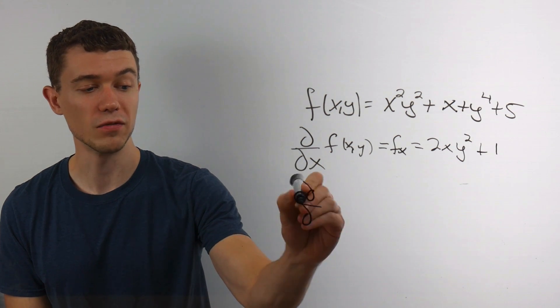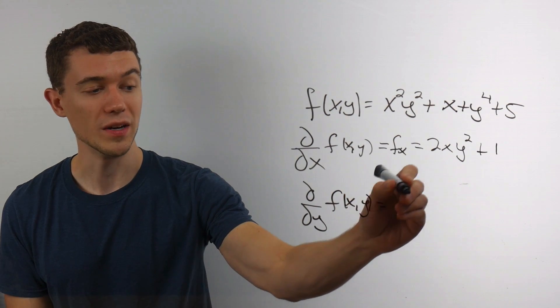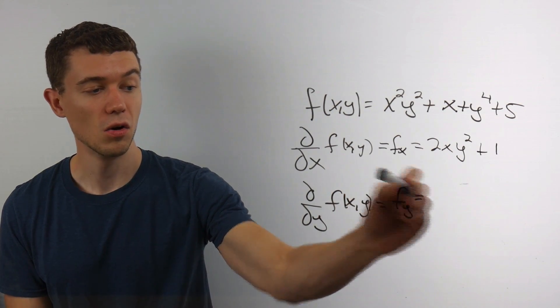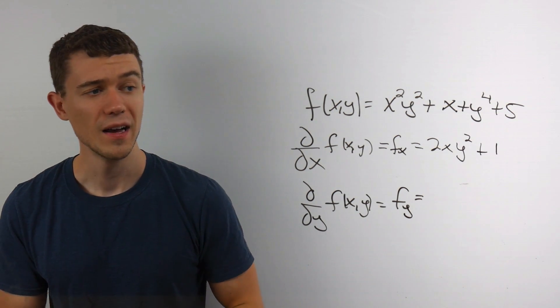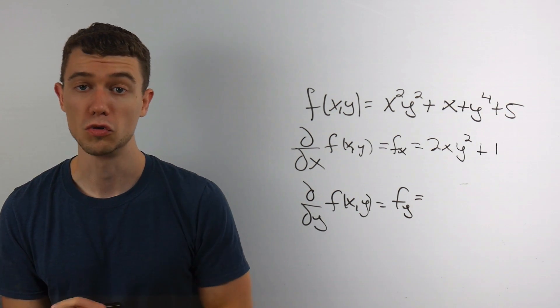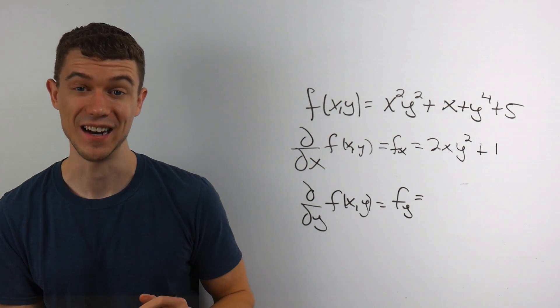We can do the partial derivative of this function with respect to y as well. You might see it denoted like this or like this, the f sub y. These mean the same thing. Let's do it. Let's take the partial derivative with respect to y this time, meaning x is a constant.